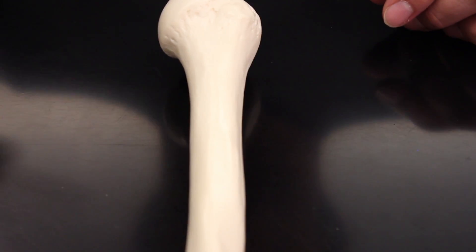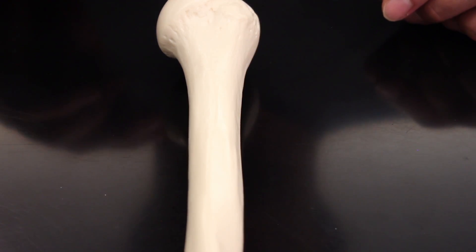Now what I'm going to do is flip it over and look at the posterior aspect. So if we look at the posterior aspect again, you can see the head there and you can see part of the tubercles.